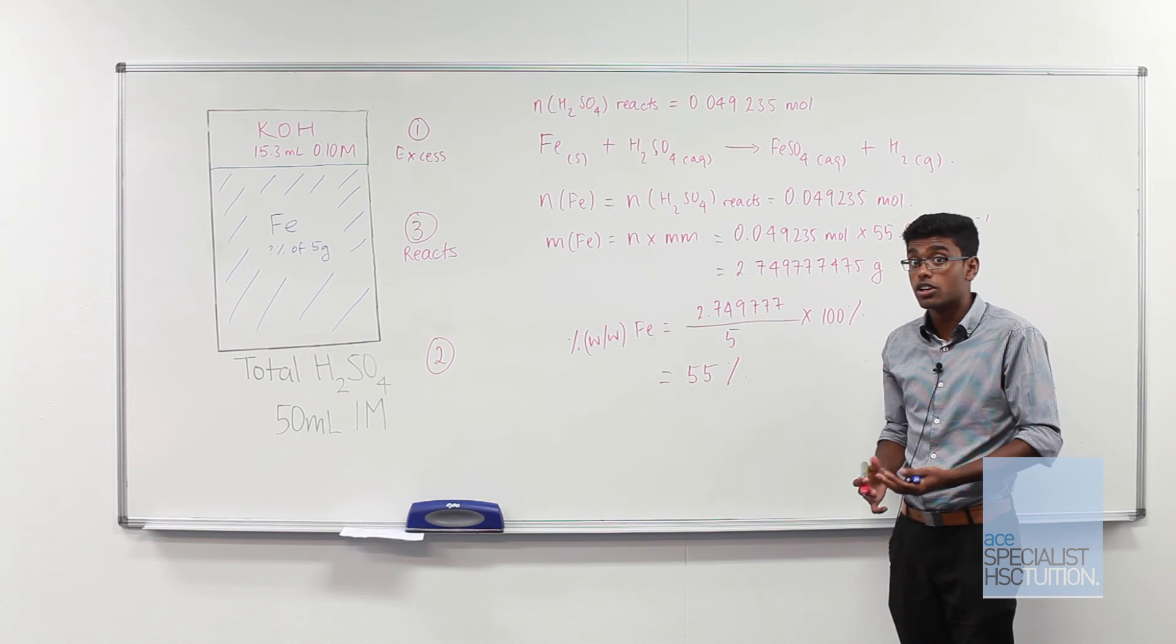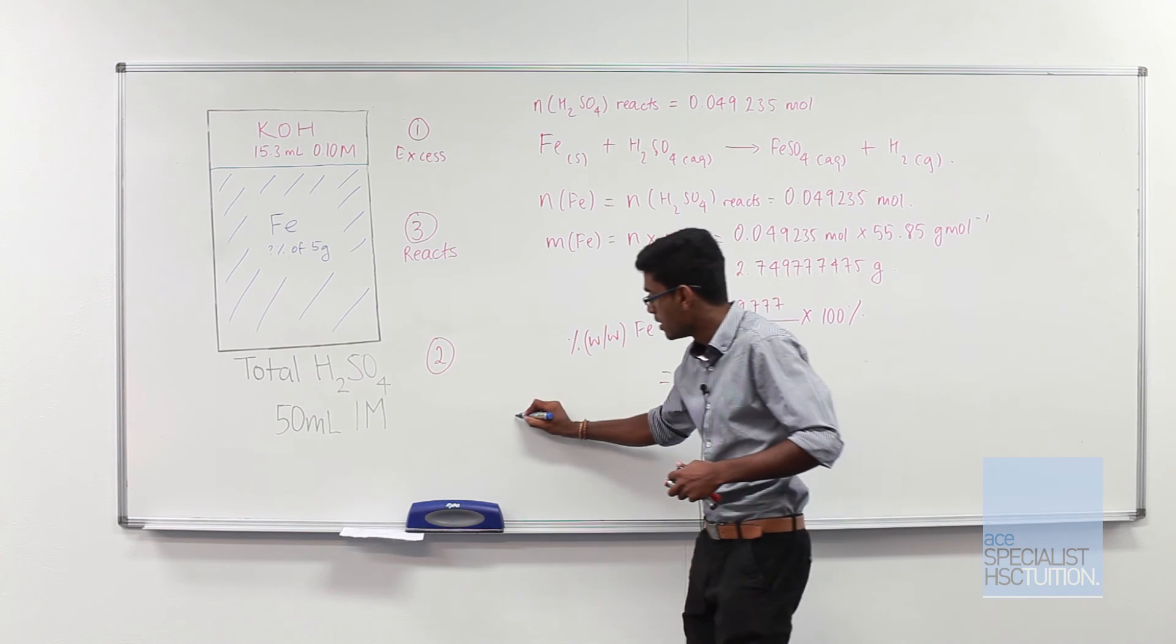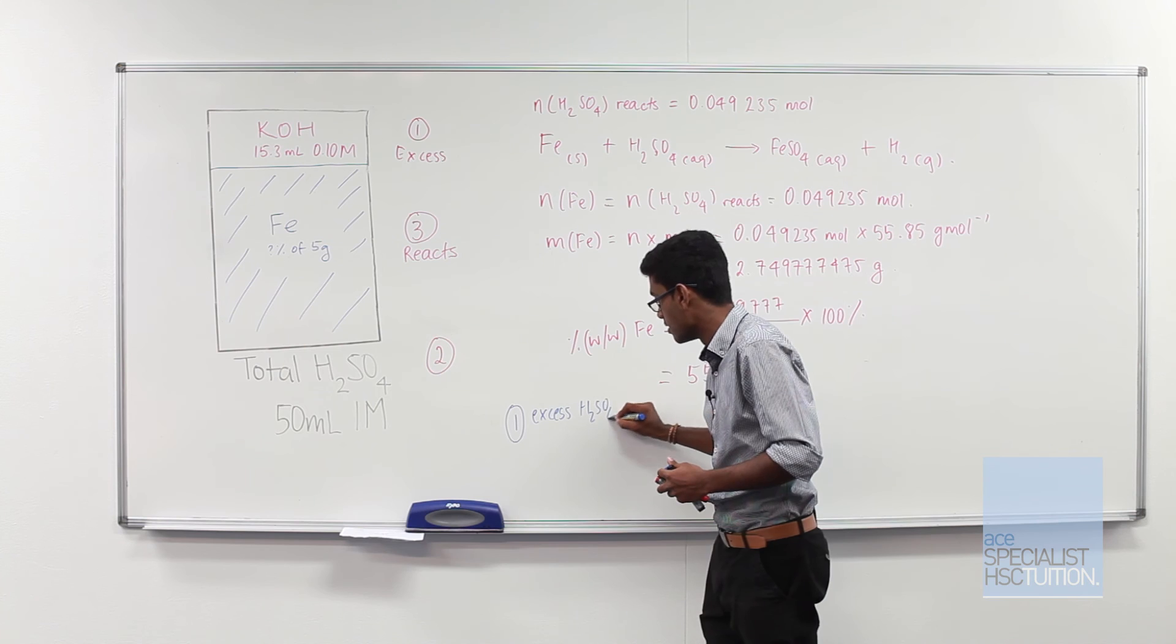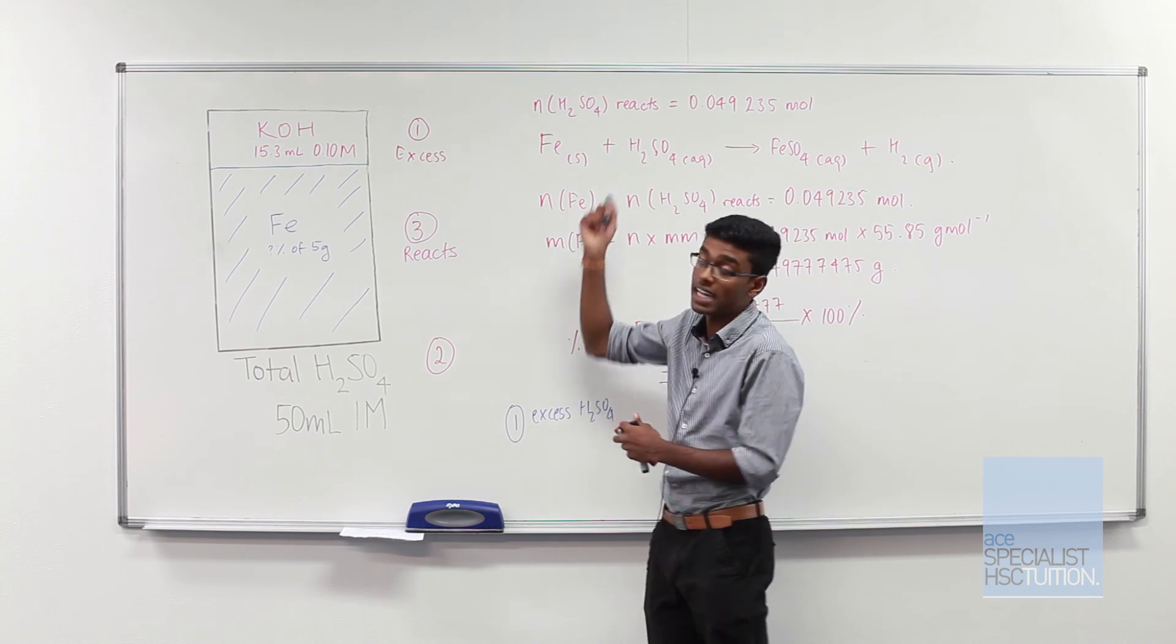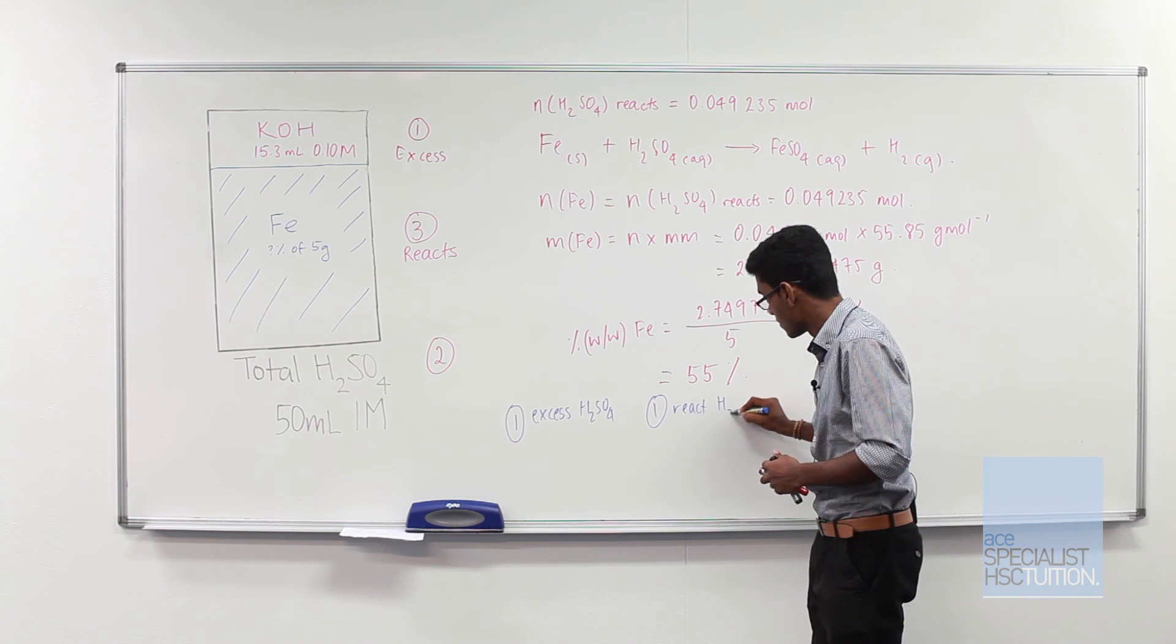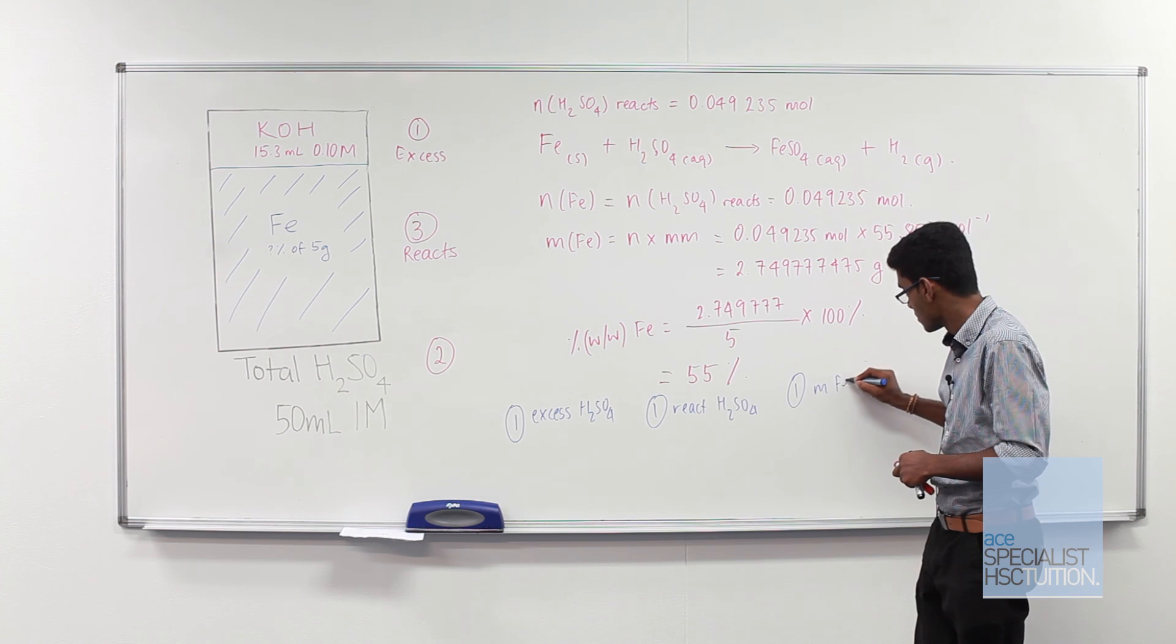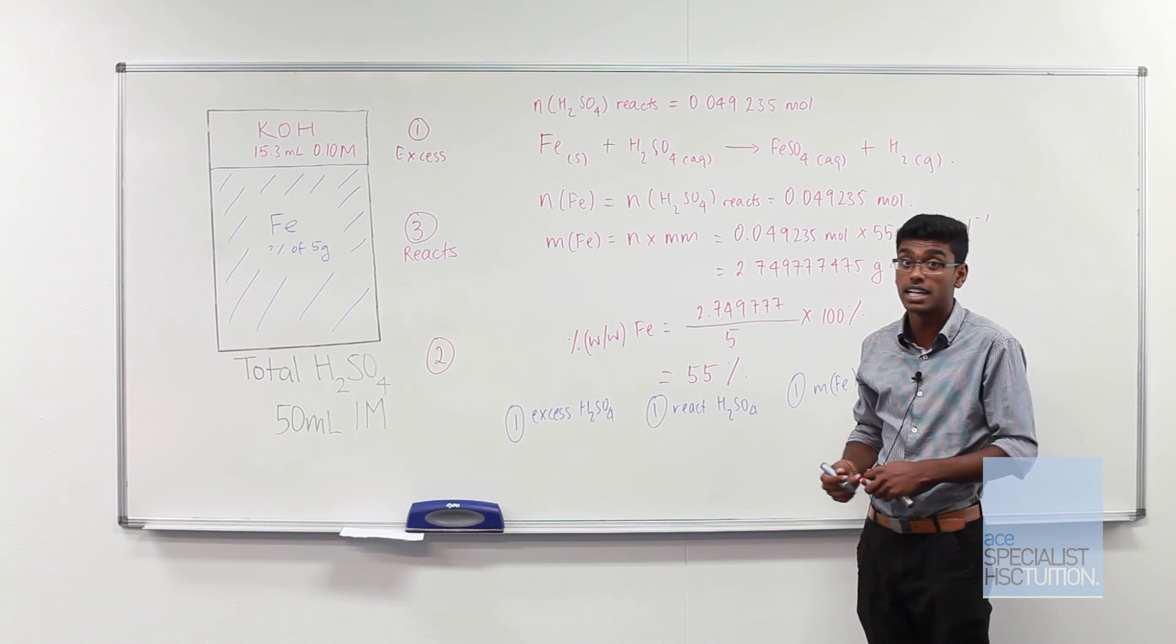So in conclusion if we were to allocate marks for this question we would say one mark was for calculating the amount of sulfuric acid moles in excess. One mark would be for working out the number of moles of sulfuric acid that reacts with our iron. One mark would be for working out the mass of iron formed. And one mark for coming up with our final answer and that's the percentage of iron in our steel alloy.